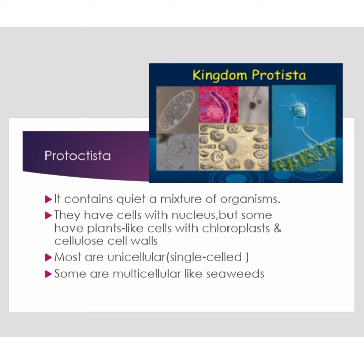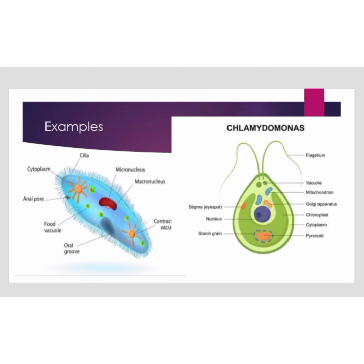Most Protista are unicellular, meaning single-celled organisms. Some are multicellular, like seaweeds. Examples of Kingdom Protista include Paramecium and Chlamydomonas.